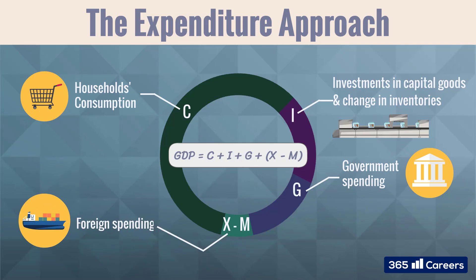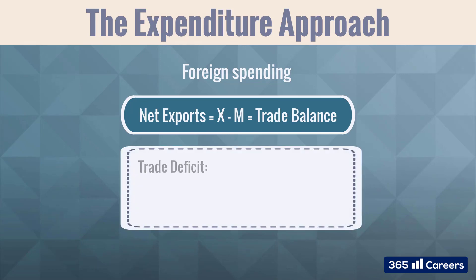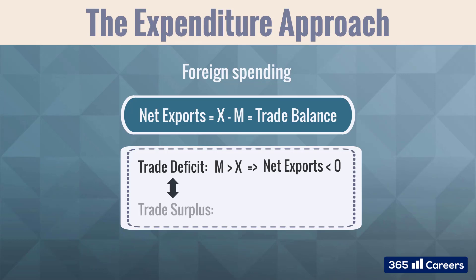Foreign spending is the last piece when measuring GDP using the expenditure approach. It includes exports minus imports in a given country. The net exports figure is also known as the trade balance of a country. If a country has a trade deficit, this means that imports are higher than exports, so the net exports are negative. A trade deficit in one country is equivalent to a trade surplus in another — it is a zero-sum game. A trade surplus corresponds to higher exports compared to imports and a positive net exports figure.